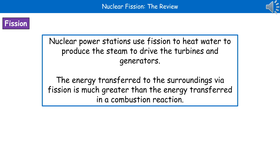In terms of where nuclear fission is useful to us, this is what we use in our nuclear power stations. We use nuclear fission to heat the water, to produce the steam; the steam drives the turbines, the turbines turn the generators, the generators make the electricity. So we're using that nuclear fission to generate the heat to convert the water into steam in that initial stage.